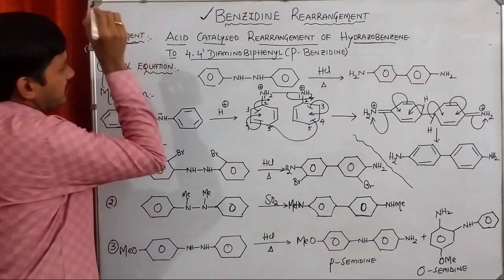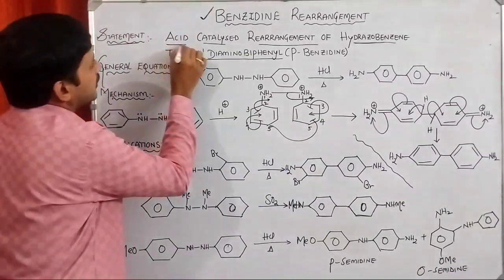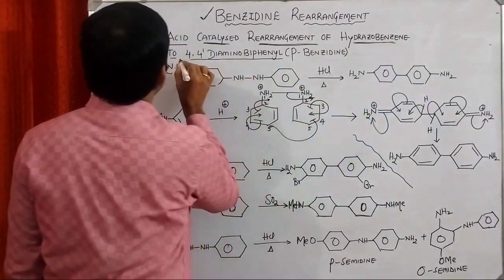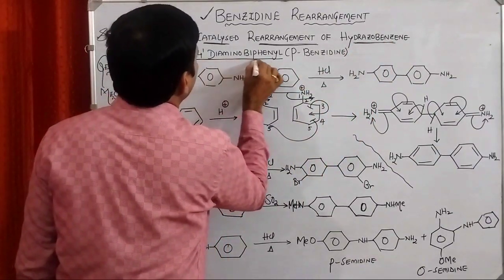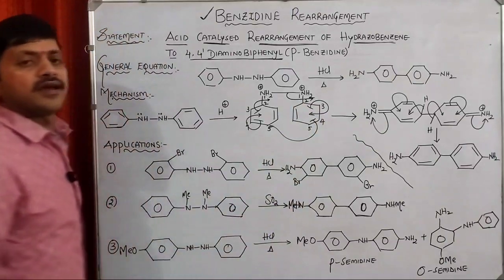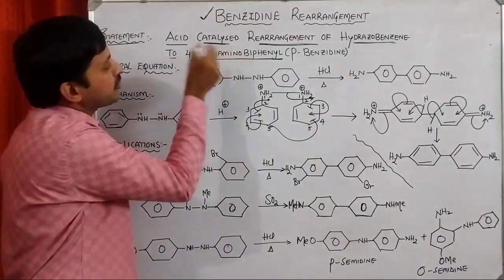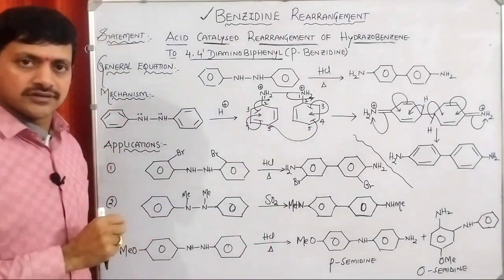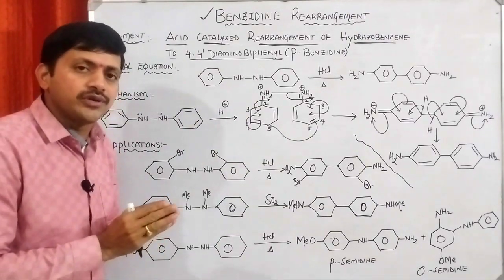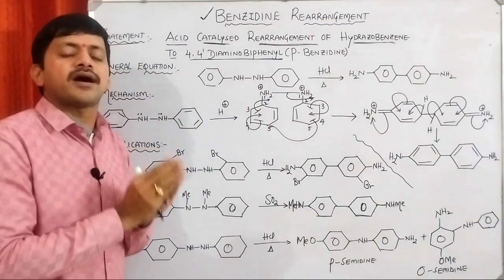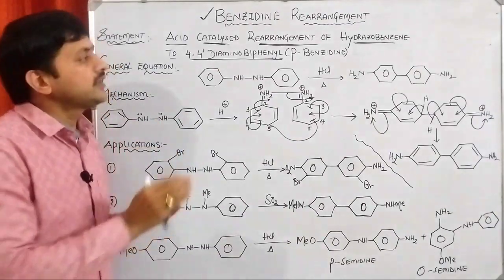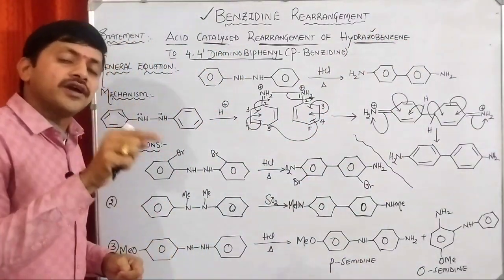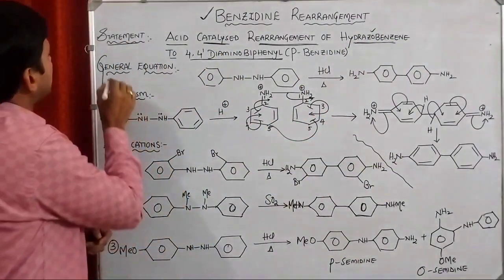If you talk about the statement — what we are observing — it is the acid-catalyzed rearrangement of hydrazobenzene to 4,4'-diaminobiphenyls. The 4,4'-diaminobiphenyls are commonly called parabenzidines. By using this particular reaction, we are synthesizing the parabenzidine compound using hydrazobenzene as the reactant in the presence of acid.